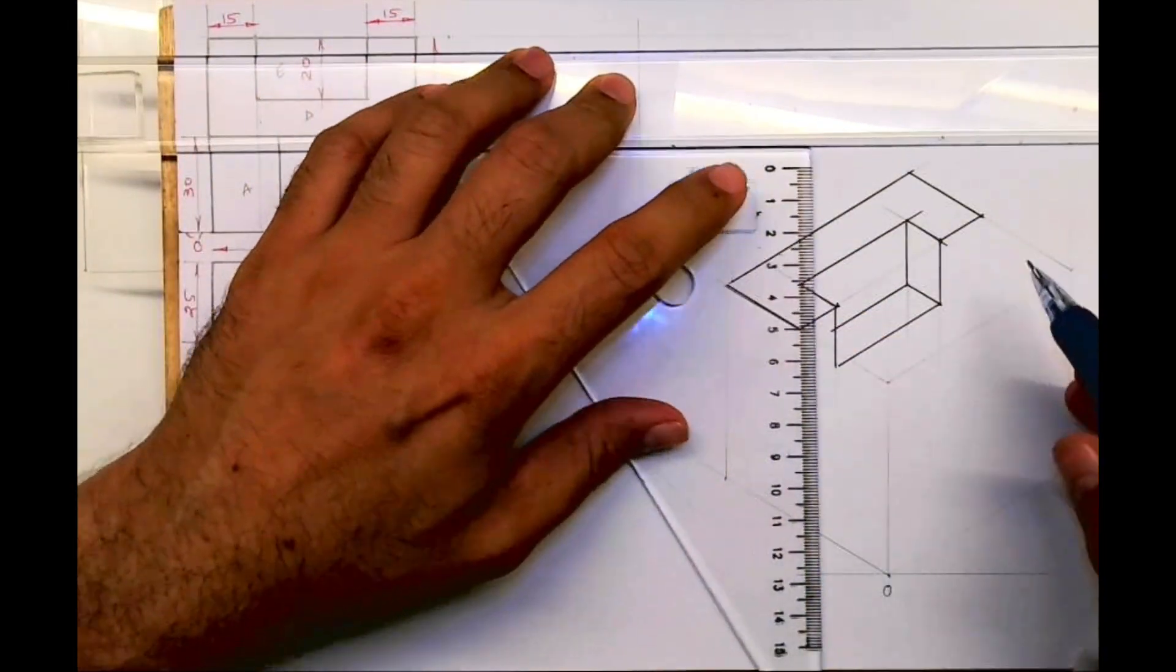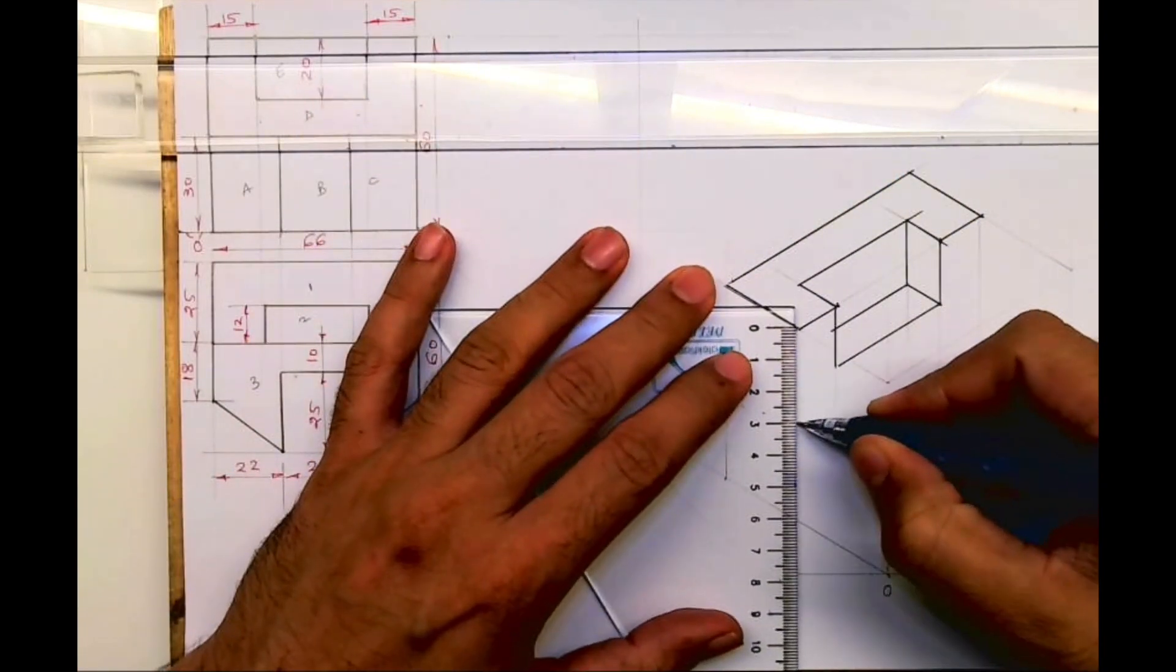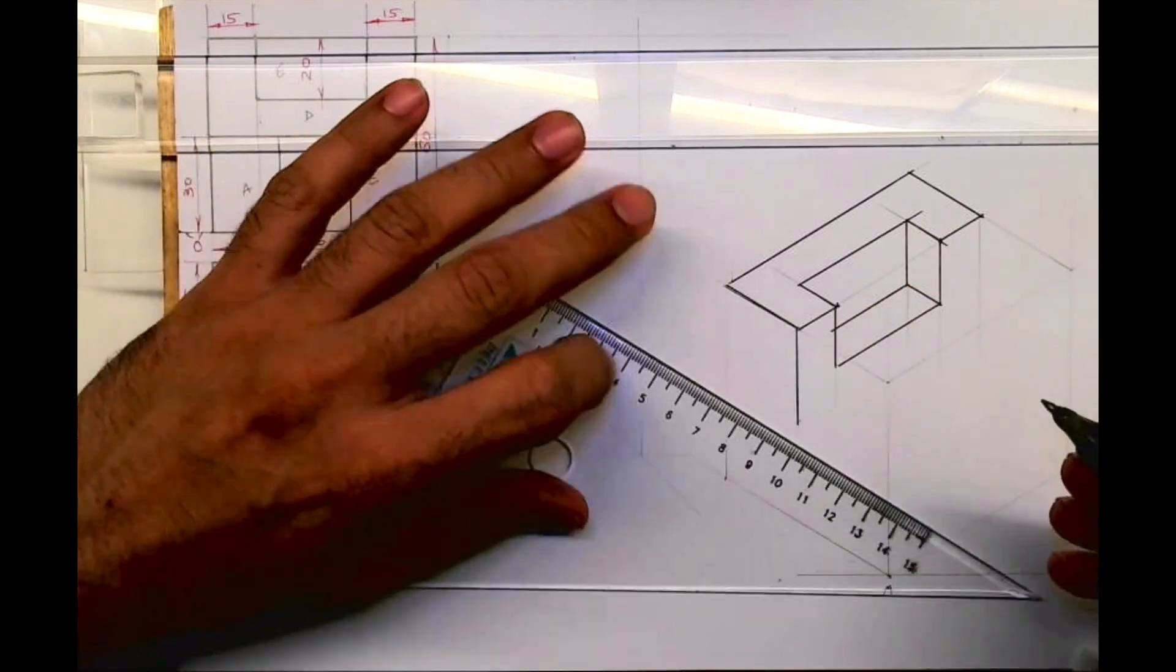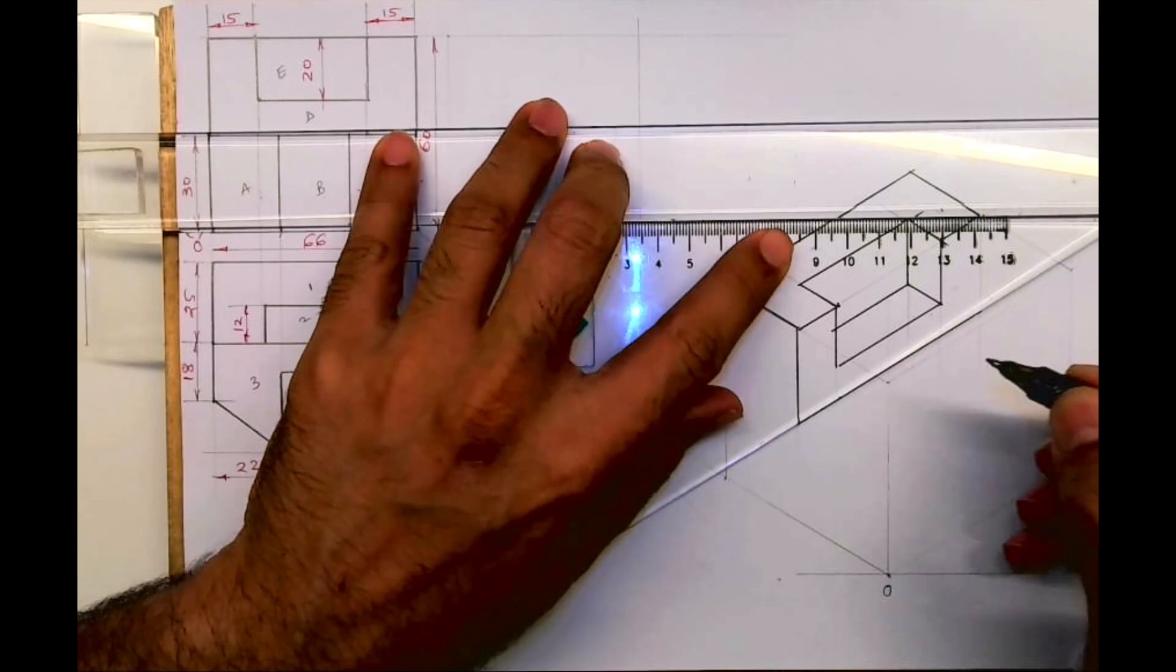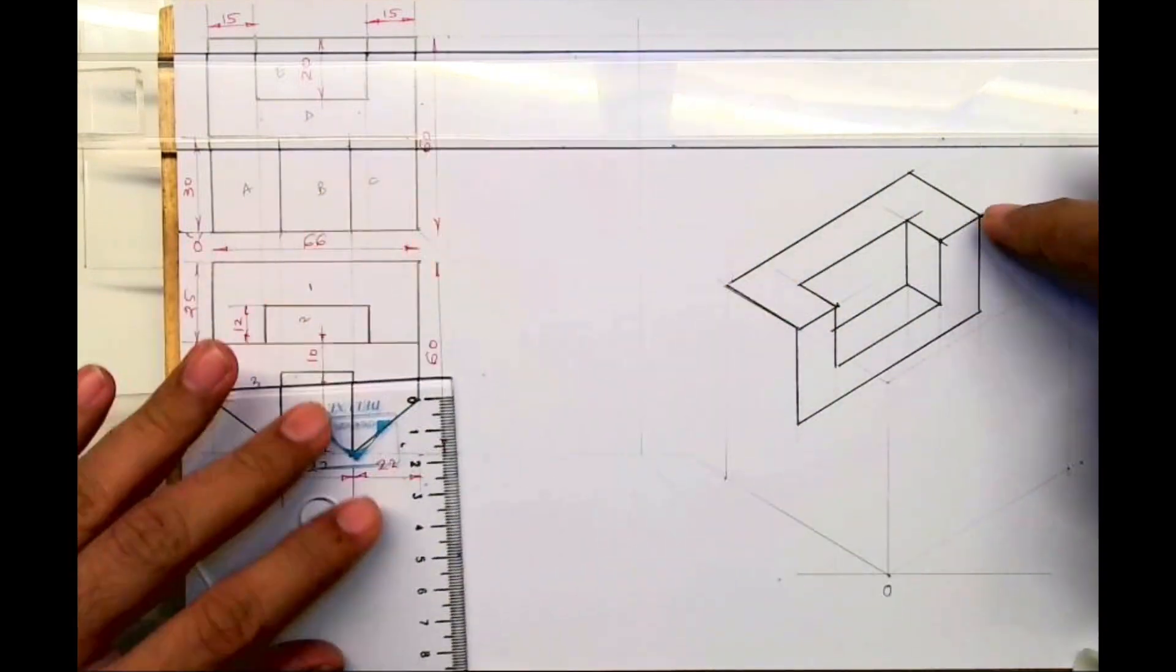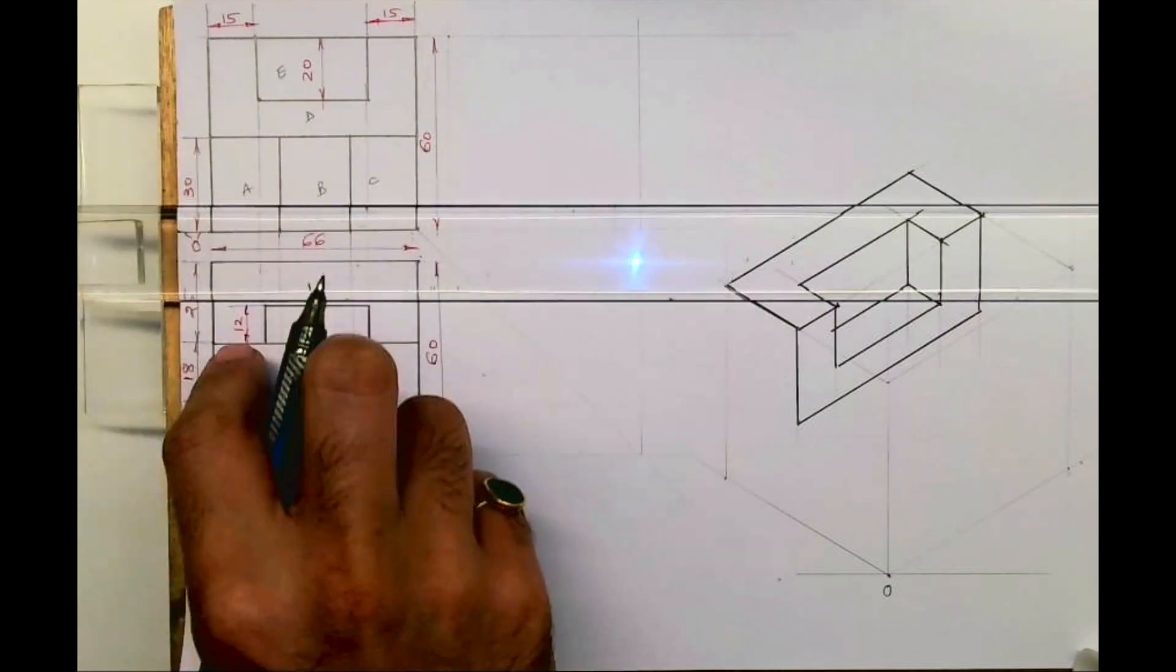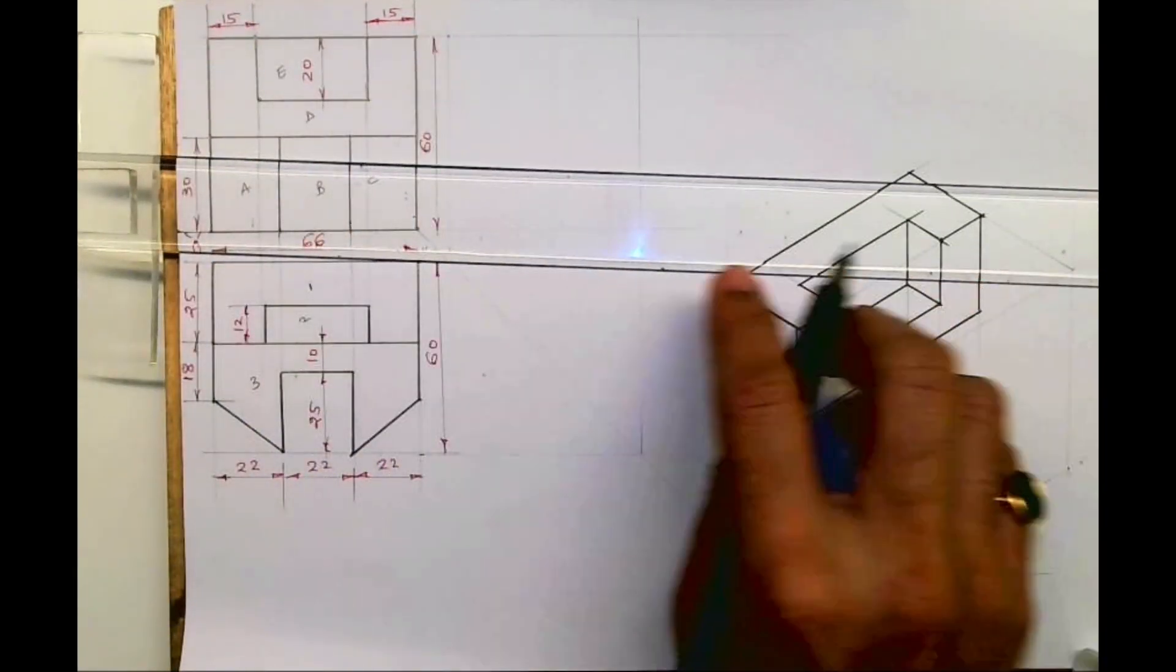Now we'll take this down by 30, so we are done with part D. If you see in front view, we are done with part D. See, this part is also done: part 1, part 2, and part E and D is also done.